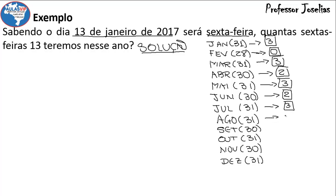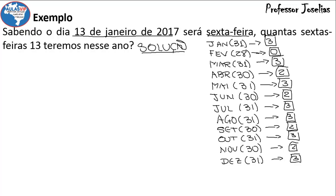De agosto para setembro, avança 3 dias. De setembro para outubro, o resto é 2 — avança 2 dias. De outubro para novembro, o resto é 3 — avança 3 dias. De novembro para dezembro, como novembro tem 30 dias, o resto é 2 — avança 2 dias. Dezembro eu coloco apenas para referência: 31 por 7 dá resto 3, então avançaria 3 dias para janeiro do ano seguinte.